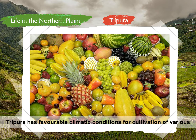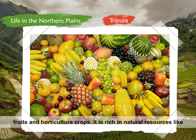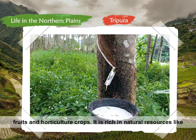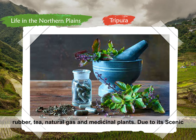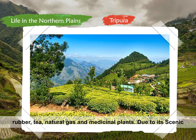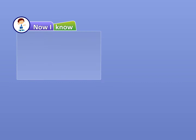Tripura has favourable climatic conditions for cultivation of various fruits and horticulture crops. It is rich in natural resources like rubber, tea, natural gas, and medicinal plants. Due to its scenic beauty, many tourists are attracted towards it.